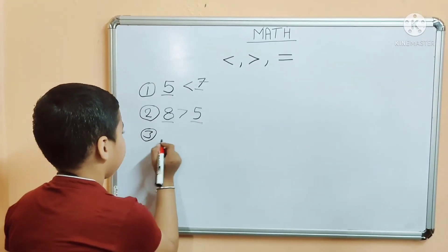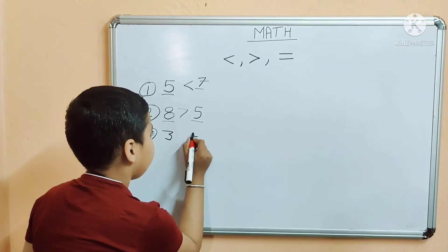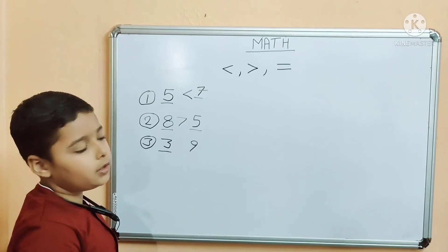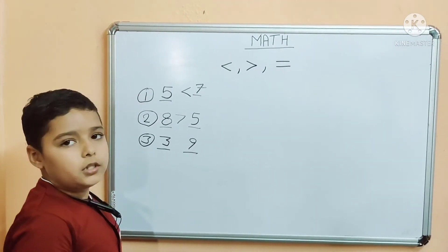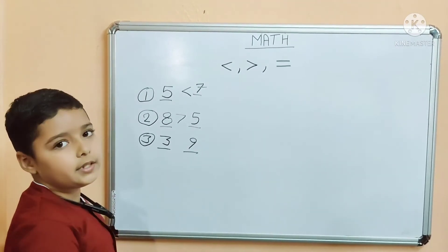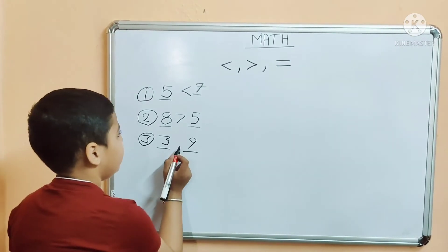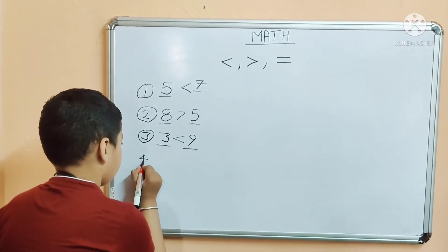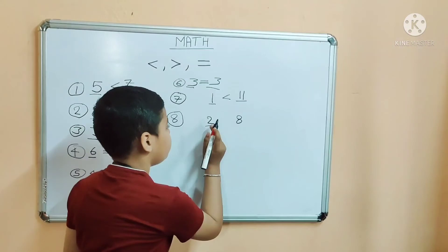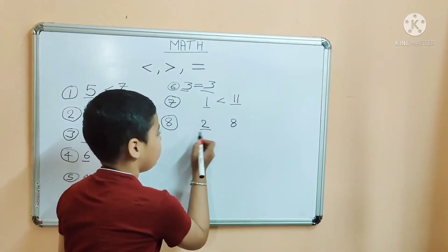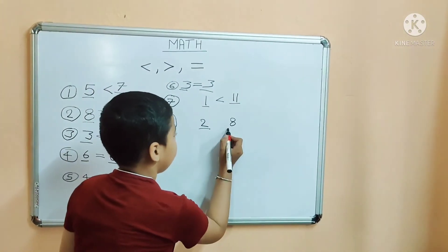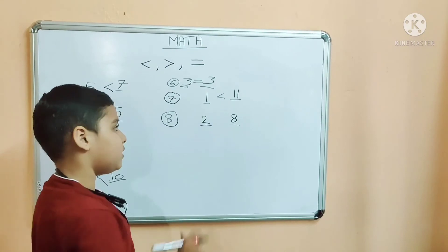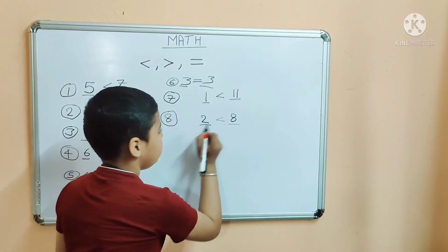Number 3: 3 and 9 — here 3 is the smaller number and 9 is the bigger number. So which symbol do we take here? Yes, it is the less than symbol. Number 4: 2 and 8 — 2 is the smaller number and 8 is the bigger number. So which symbol do we take here? Yes, it is the less than symbol.